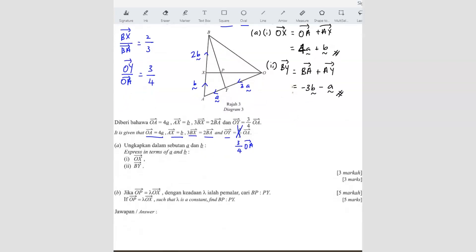Question B. If OP equals to... they gave you this equation here. OP equals to lambda OX such that lambda is a constant. Find BP to the ratio of PY. They want to find that ratio. So we use the given formula first. They tell you that OP equals to lambda OX. What is OX again? We have OX from the first part. So we can just substitute first. 4A plus B. So we get 4 lambda A plus lambda B. So we got OP now.